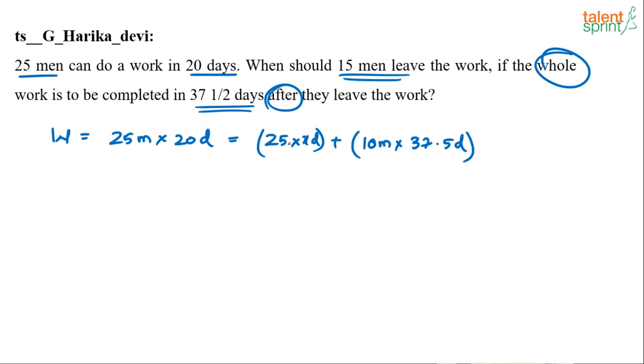So D anyway is common. I mean this 25 men, 10 men, forget about those variables M and D. I mean those I wrote just to explain how the equation is getting formed. So basically 25 into 20 is 500, equal to 25X plus 10 into 37.5 is 375.